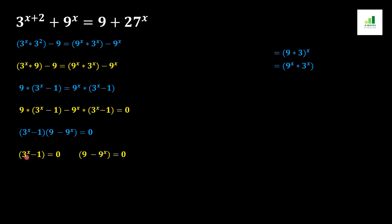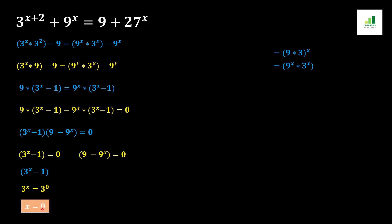Now we simplify for x from both conditions one by one. First, from 3 to the power x minus 1 equals 0: the minus 1 moves to the other side and becomes positive 1. From the basic rule of algebra, 1 can be written as 3 to the power 0, because any value raised to the power 0 equals 1. Since both bases are equal, their powers are also equal, so x equals 0. That is our first solution.